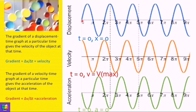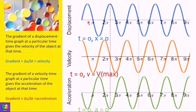The gradient of the displacement-time graph gives the velocity of the oscillator at any time t — that is, v equals Δx over Δt. The velocity is maximum at t equal to zero. The shape of the velocity-time curve is the same general form as the displacement-time graph — it is a smooth sinusoidal curve showing how velocity v depends on time t.